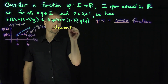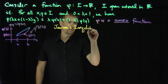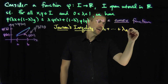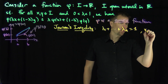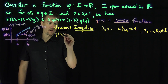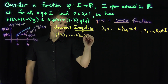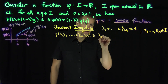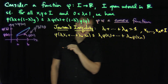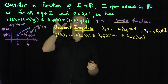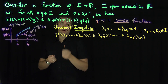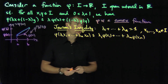Jensen's inequality says the following: if lambda 1 through lambda n add up to 1, and x1 through xn are in the interval i, then phi of lambda 1 x1 plus all the way down to lambda n xn is less than or equal to lambda 1 phi of x1 plus all the way down to lambda n phi of xn. It looks like the definition of convexity but with an arbitrary number of points, with weights lambda 1 through lambda n adding up to 1 — essentially a simplex.